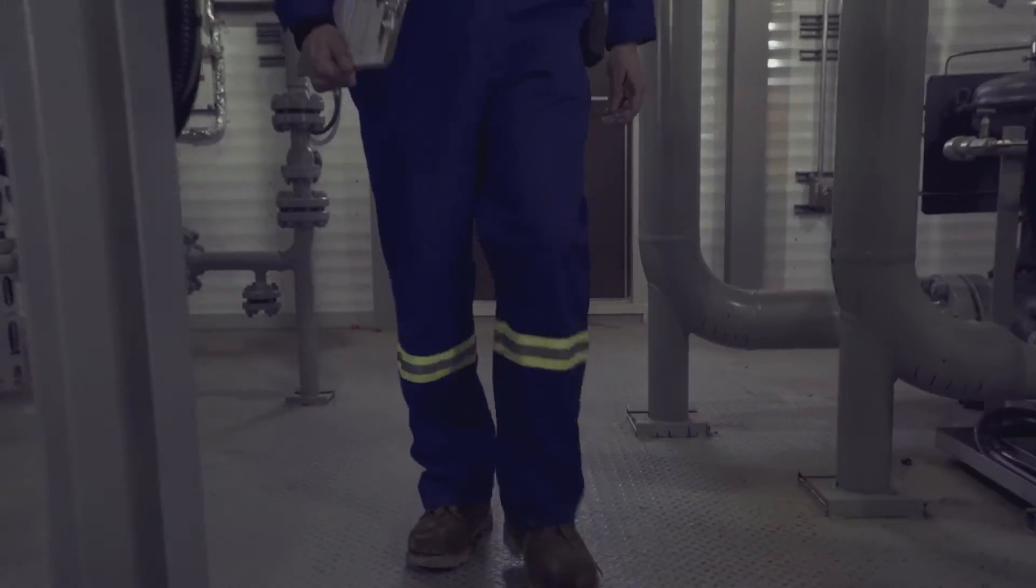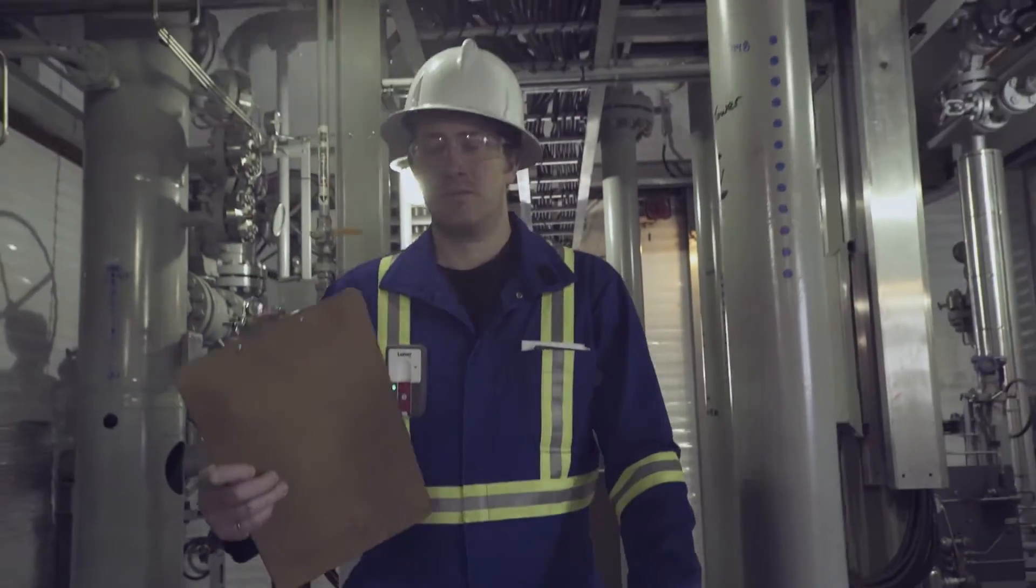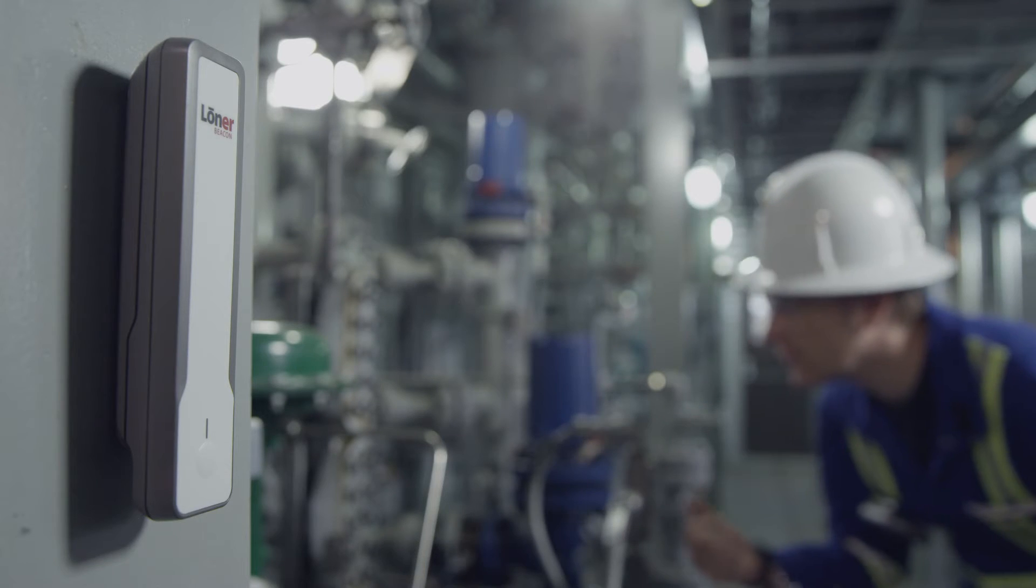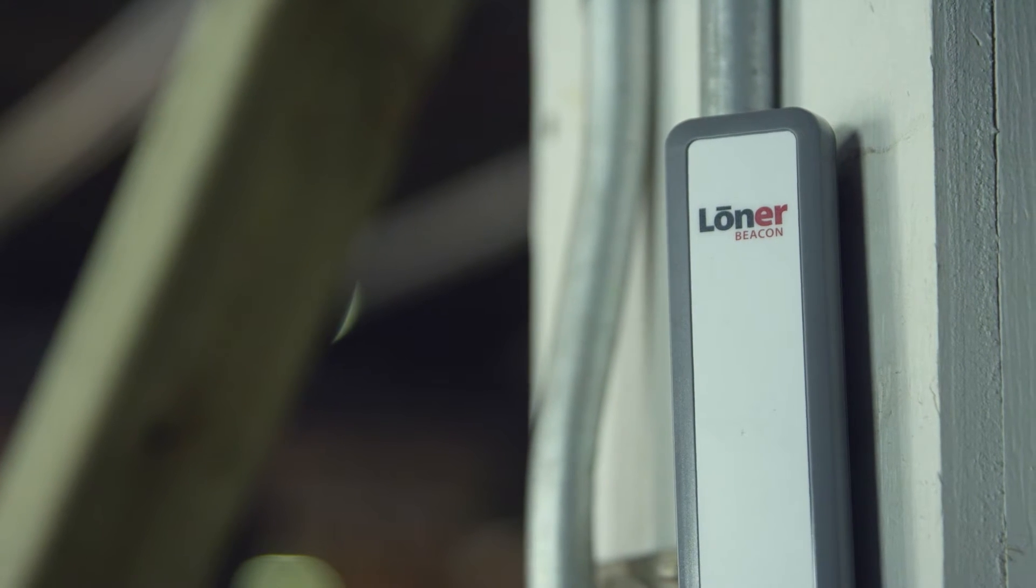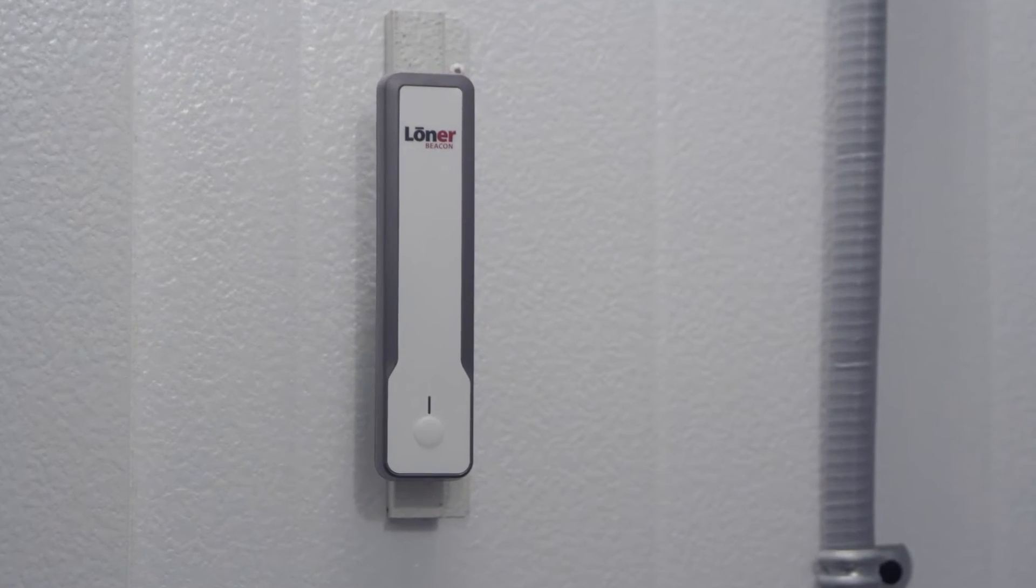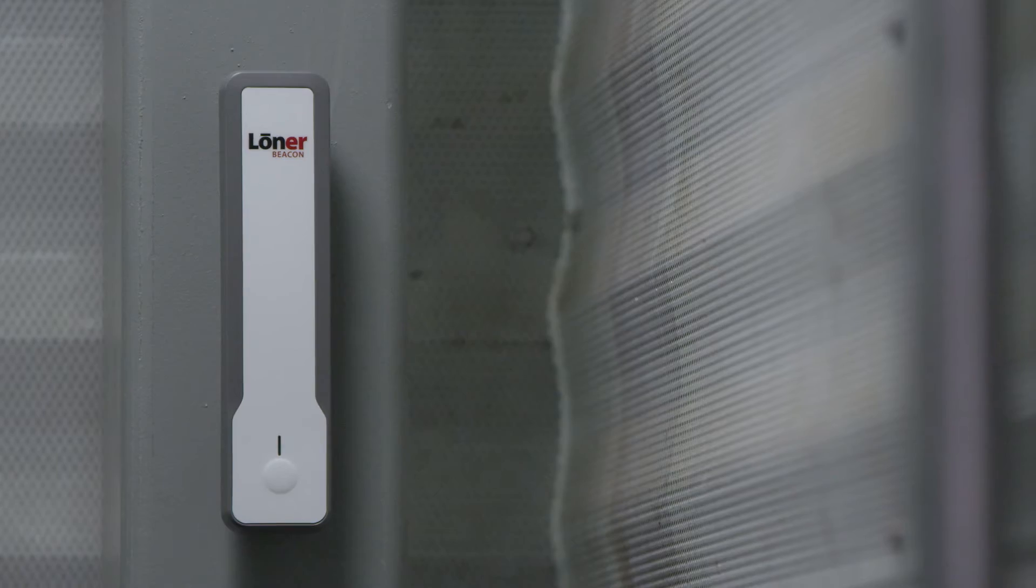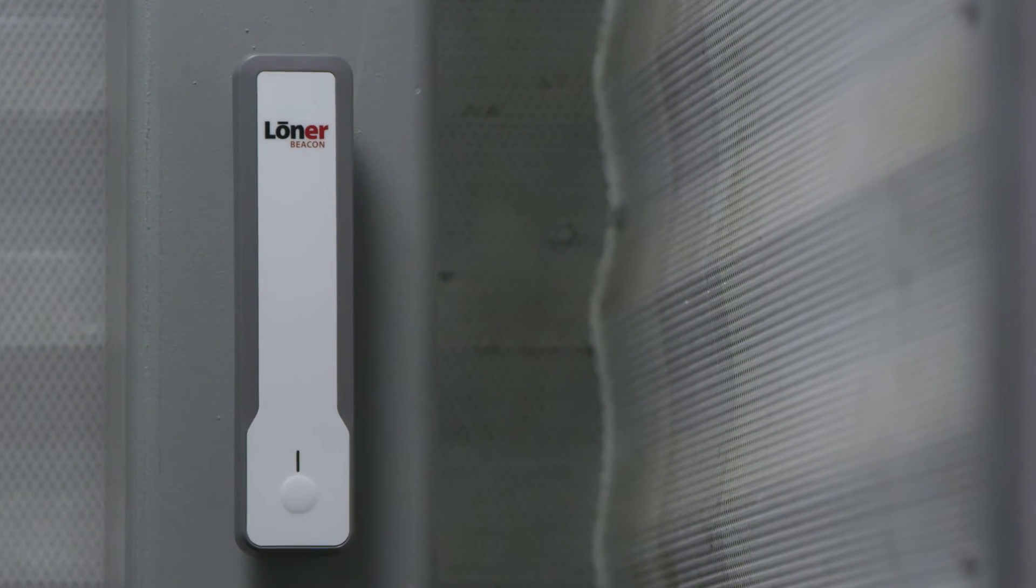Blackline's indoor location technology maps the exact location of all personnel, continuously and in real time. Delivering industry-leading accuracy, our indoor location beacons are affordable, robust and easy to install, clipping into place without the need for custom wiring.